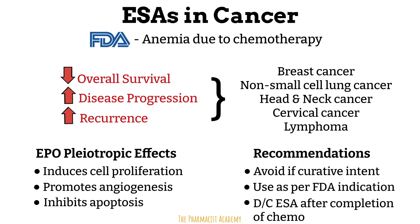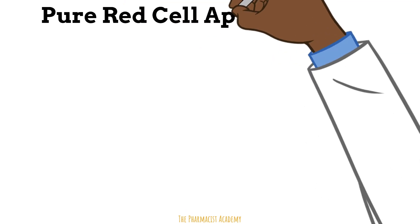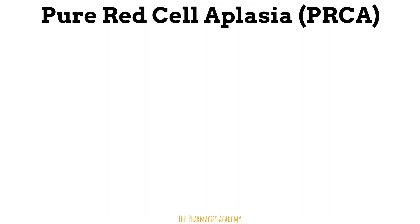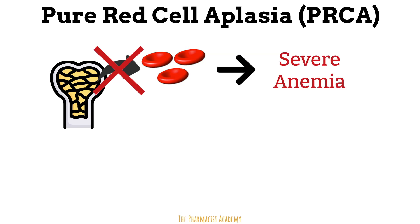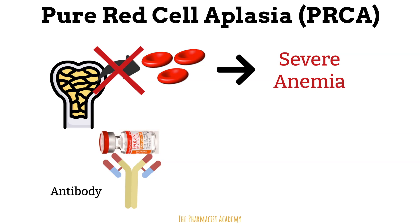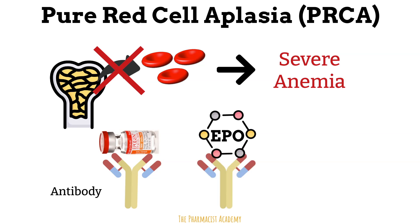Another precaution is something known as pure red cell aplasia. This is a rare disorder that causes the bone marrow to stop producing red blood cells, leading to severe anemia. The pathophysiology is related to the body developing antibodies against the administered ESA, which neutralize it — but unfortunately, these antibodies also start neutralizing the body's own erythropoietin, ultimately leading to failure of the bone marrow to make red blood cells. If severe anemia develops along with a low red blood cell count in a patient receiving ESAs, hold therapy and test for these antibodies. If positive, discontinue the ESA permanently and do not switch to another ESA.